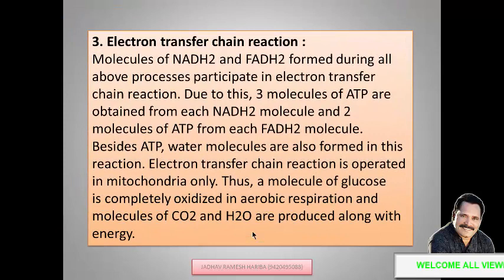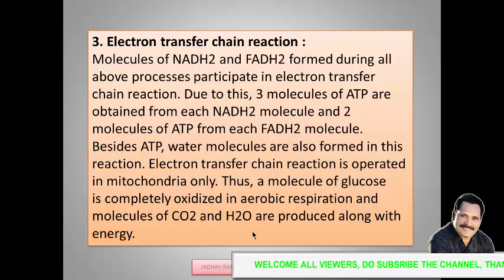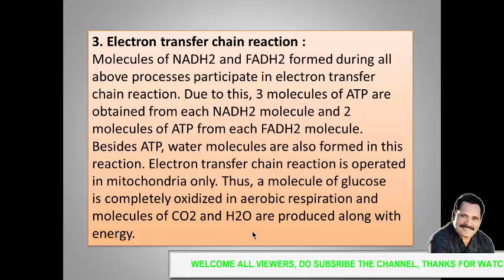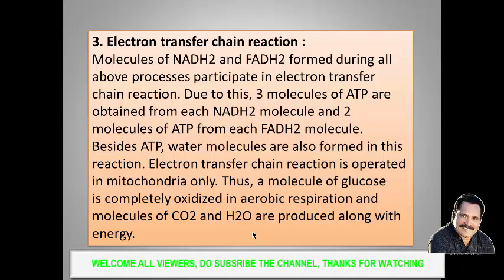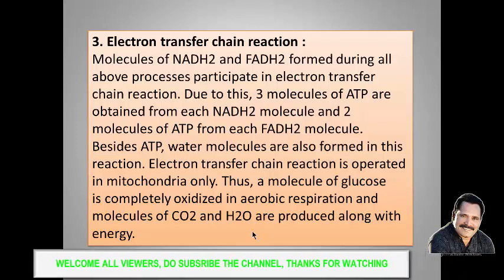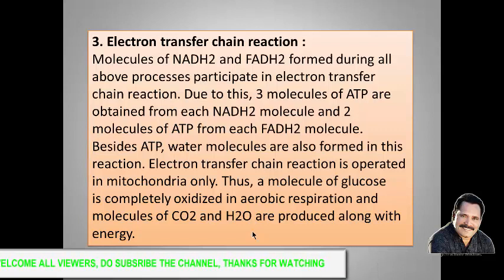The next step in respiration is the electron transfer chain reaction. Molecules of NADH₂ and FADH₂ formed during glycolysis and the TCA cycle participate in the electron transfer chain reaction. Due to this, three molecules of ATP are obtained from each NADH₂ molecule, and two molecules of ATP from each FADH₂ molecule. Water molecules are also formed. This electron transfer chain reaction is operated in the mitochondria only.